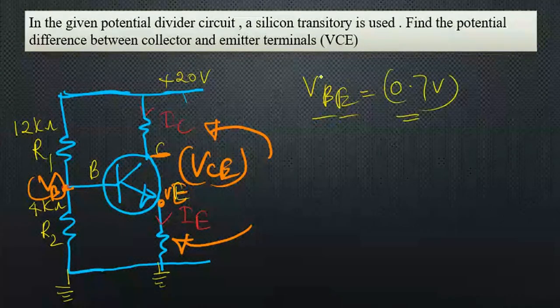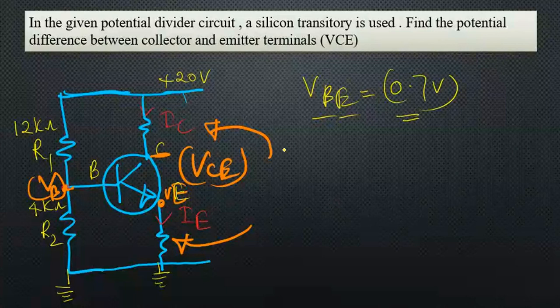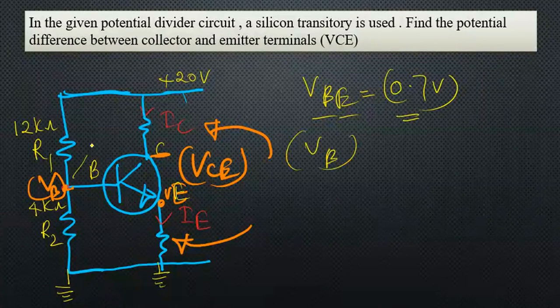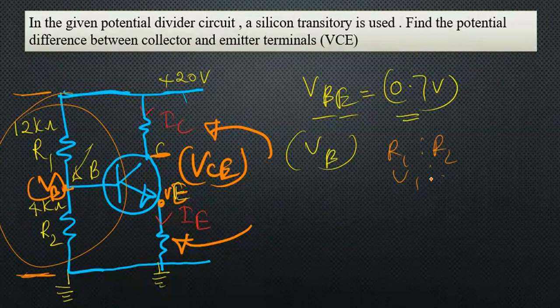Let's apply this to the question. Initially, to find VB here at this point, we need to apply potential divider for this circuit, for R1 and R2. In potential divider method, we take the resistance ratio: R1 to R2 equals V1 to V2.